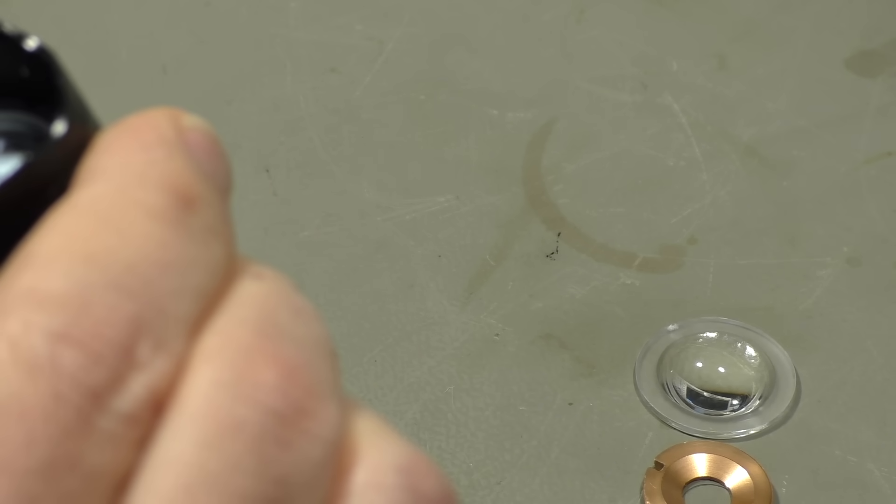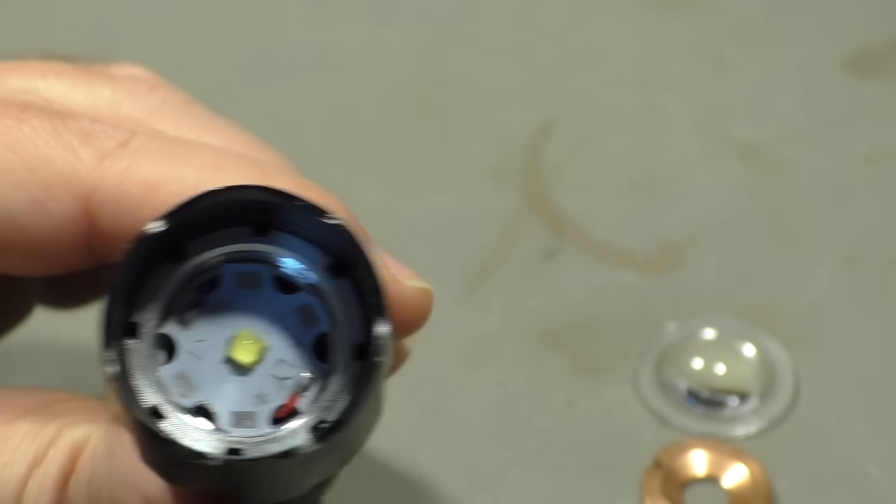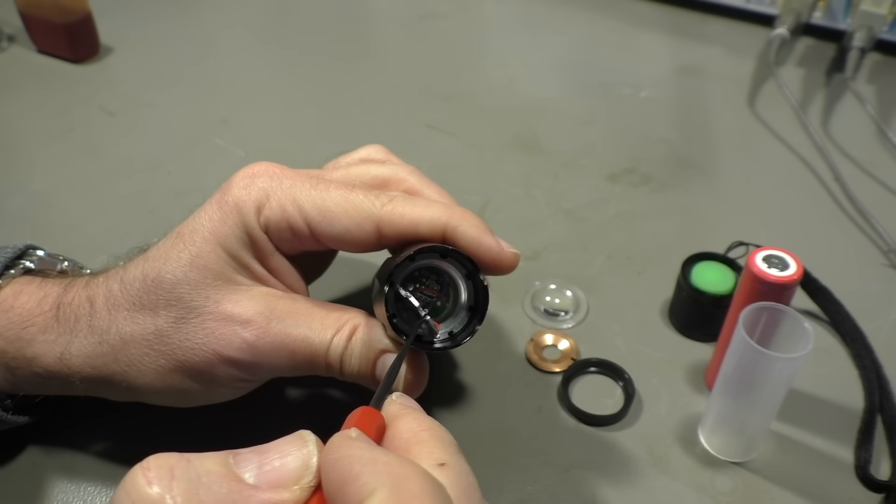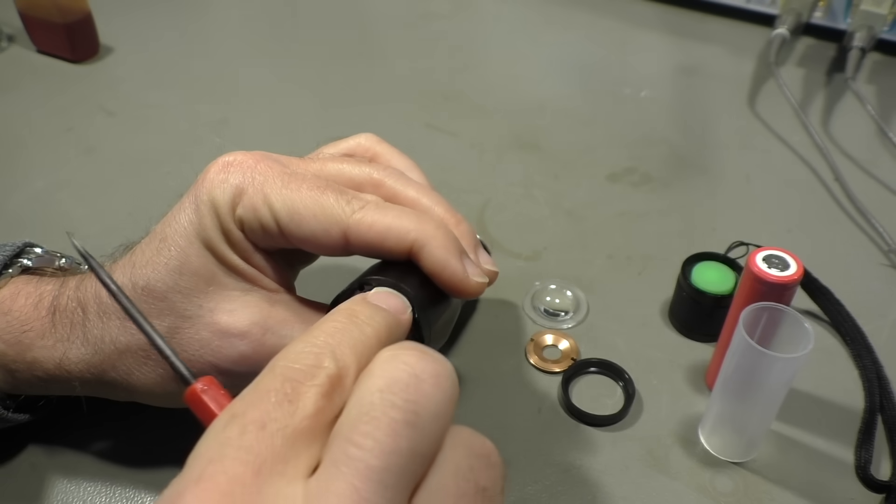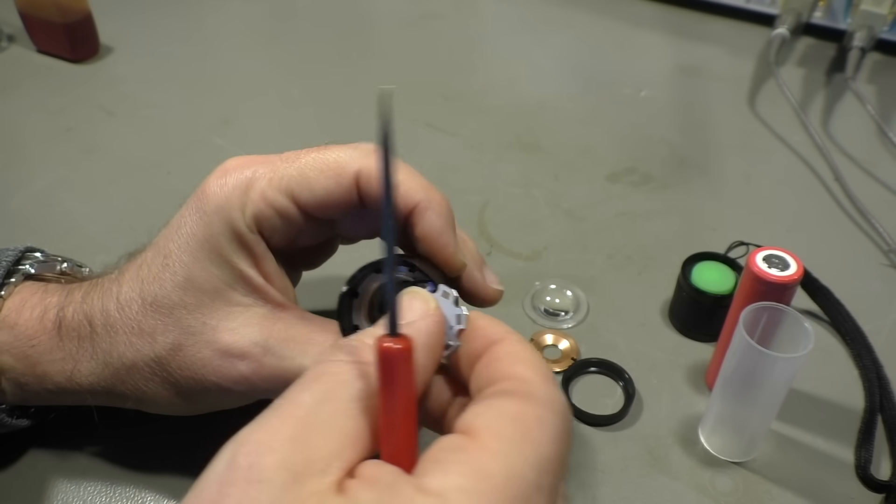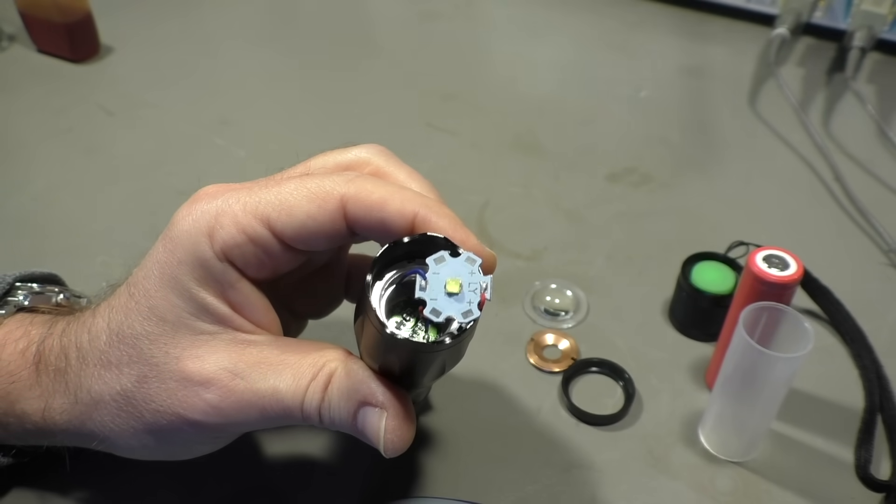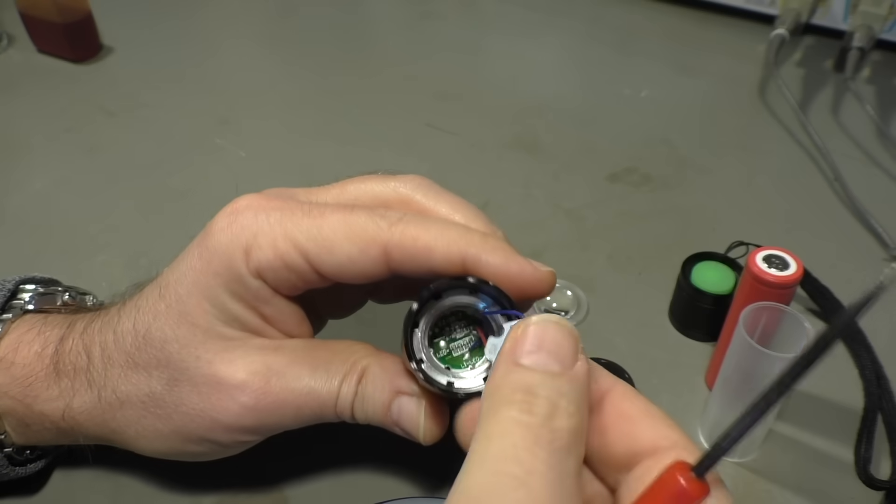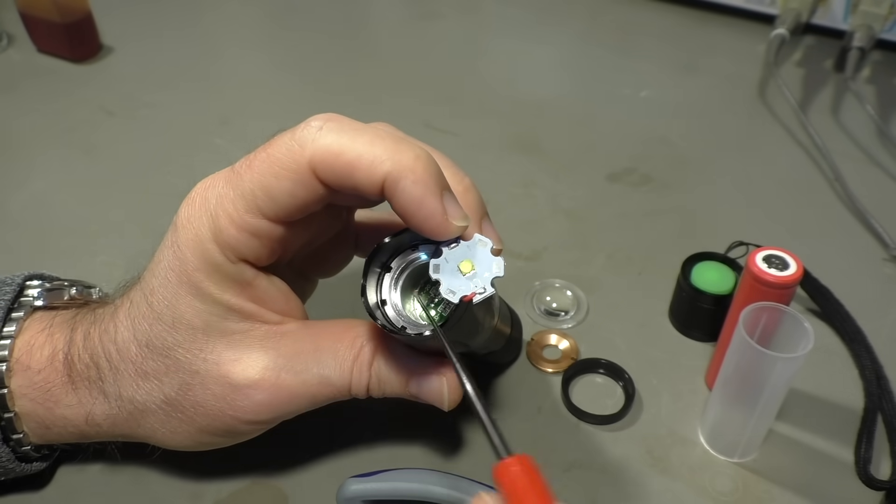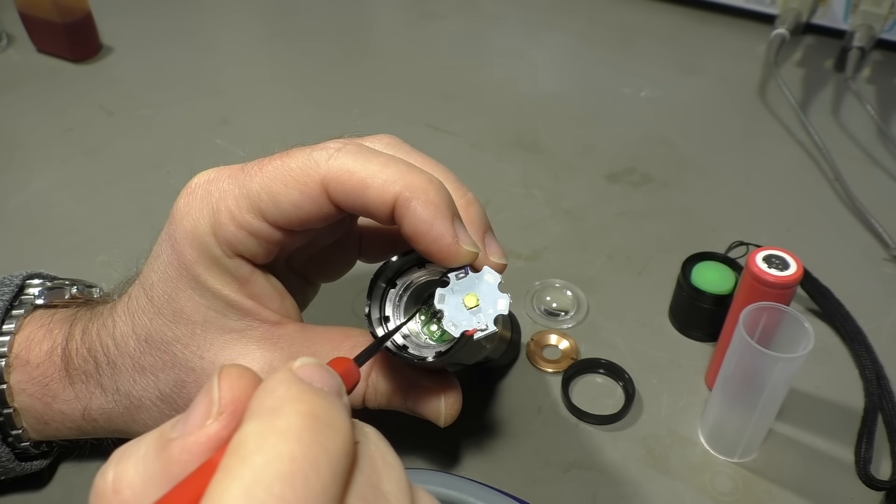It's absolutely not tightened. As I said, it is not copper. It looks like it but it's only aluminum. Okay, now we should be able to get this electronic part out here.